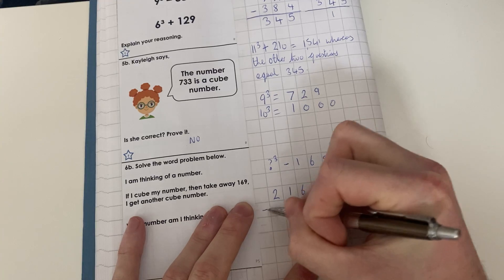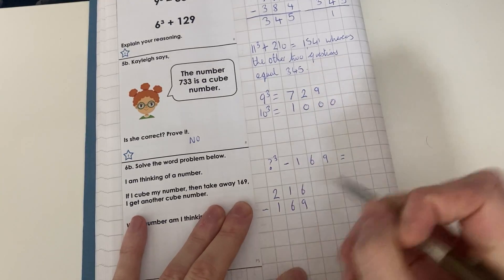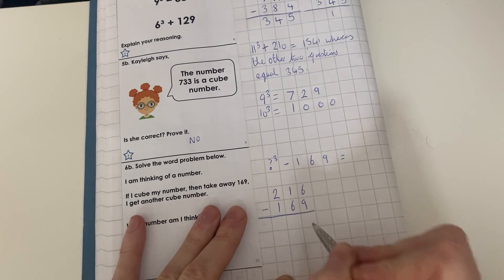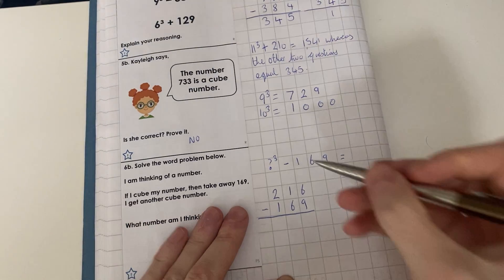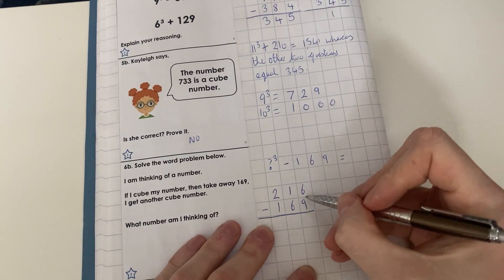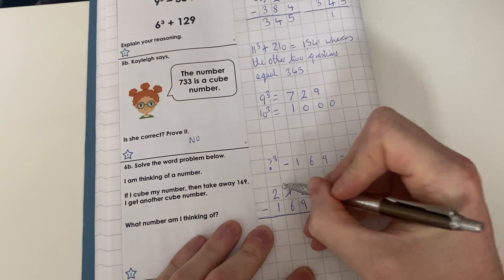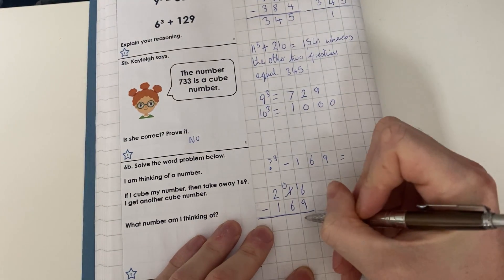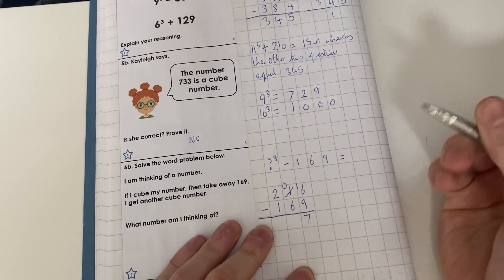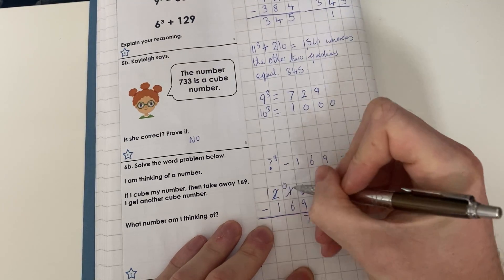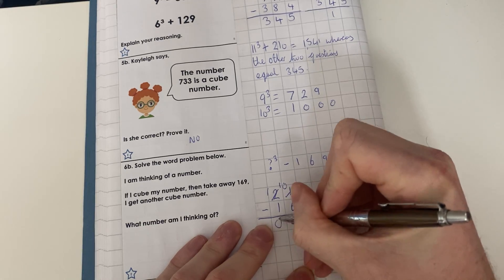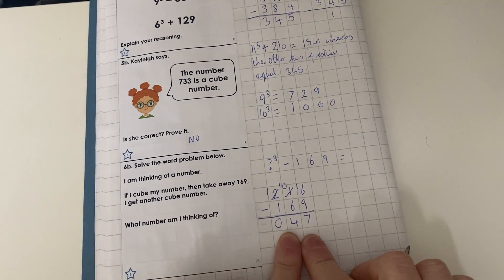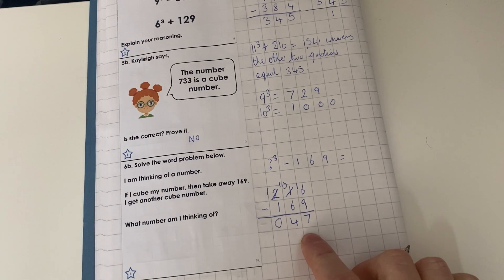Now if our answer is a cube number, we've got it right. So let's see. 6 - 9 cannot do. 16 - 9 = 7, 0 - 6 we cannot do, 10 - 6 = 4, 1 - 1 = 0. 47 is not a cube number. There is no number that when you multiply it by itself and itself again will give you the answer of 47.